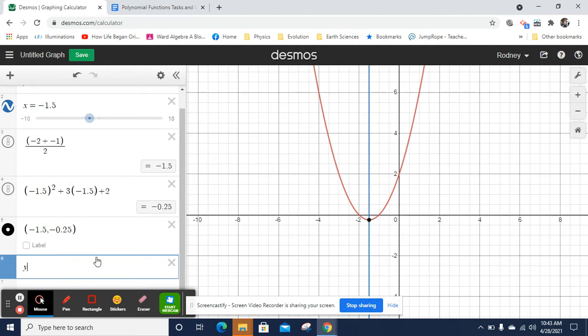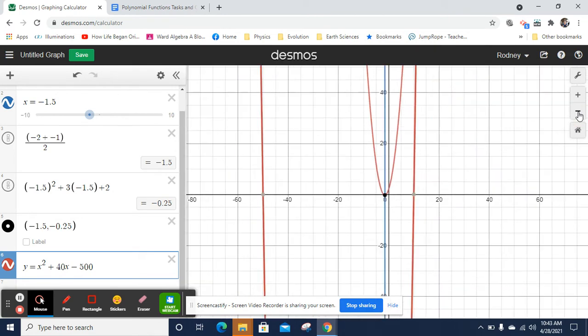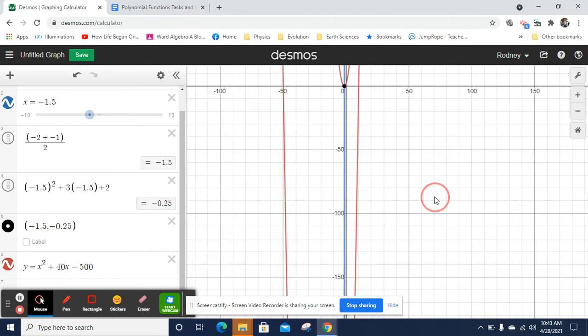Let's say we have y equals x squared, and we'll say plus 40x, and then we'll say minus 500. And let's think about what the heck that's going to be. I'm going to zoom way out, and you can see this parabola. So it's way down there. The vertex is way down there.